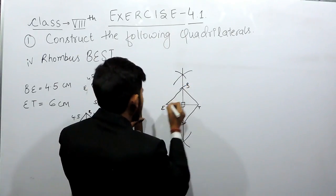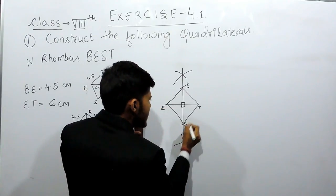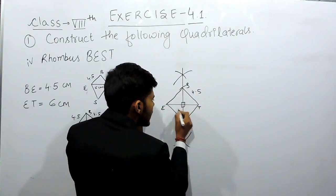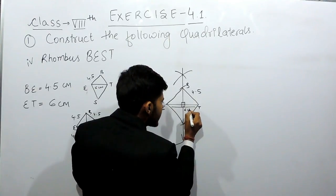Now this will be the rhombus, this is B, this is E, this is S and T. This is 4.5 cm and this complete is of 6 cm.